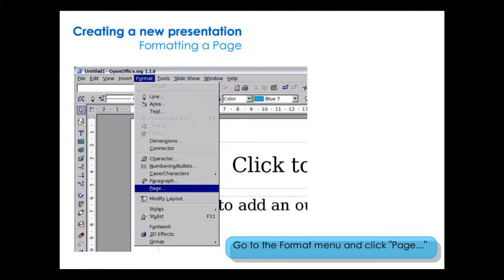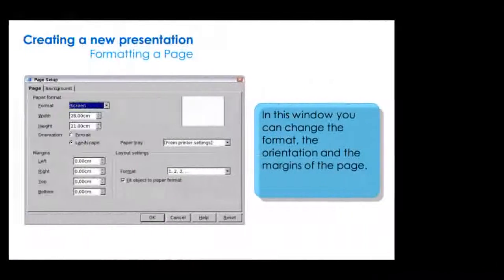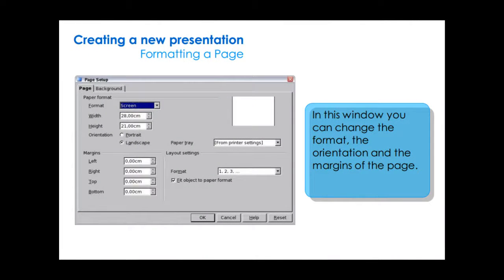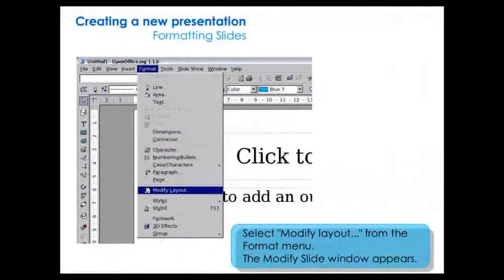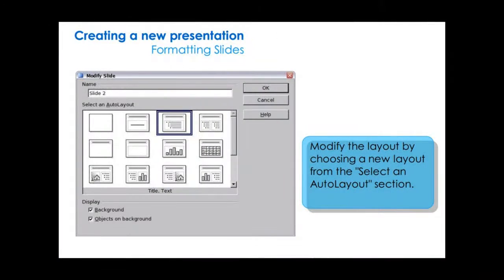For formatting a page, go to the Format menu and click Page. In this window, you can change the format, the orientation, and the margins of the page. Next, select Modify Layout from the Format menu. The Modify Slide window appears. Modify the layout by choosing a new layout from the Select and Auto Layout section.